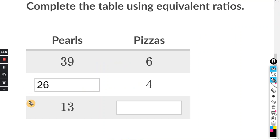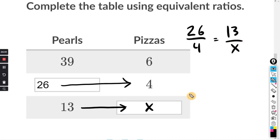One more. We'll do the same thing right here. We'll leave this as X. So 26 divided by 4 is going to equal 13 divided by X. Once you set it up, you can cross multiply. Top times bottom is 26 times X. Bottom times top is 4 times 13.